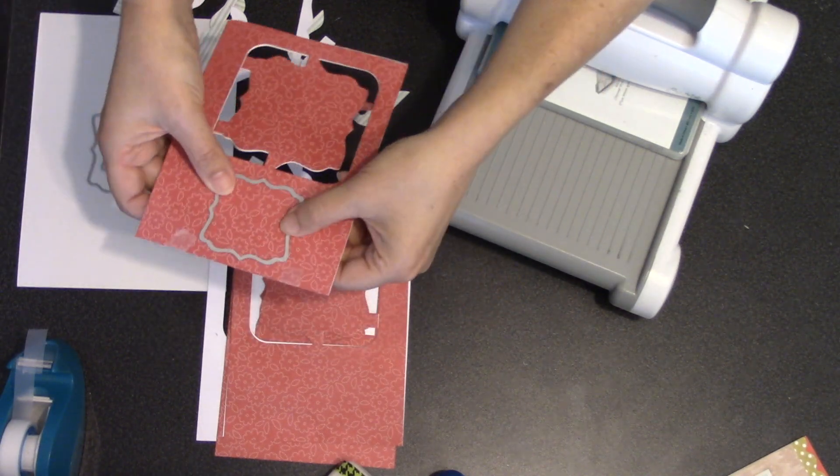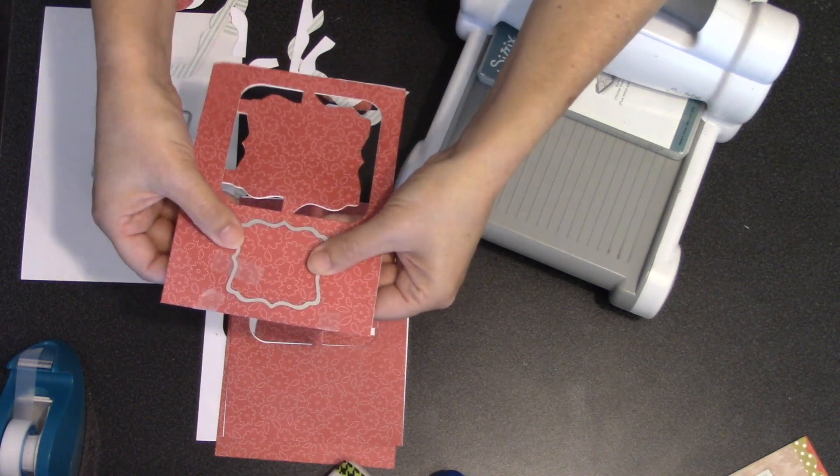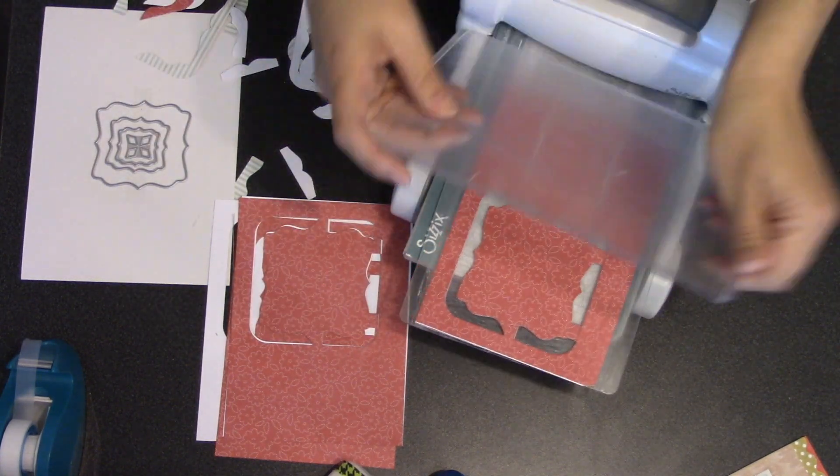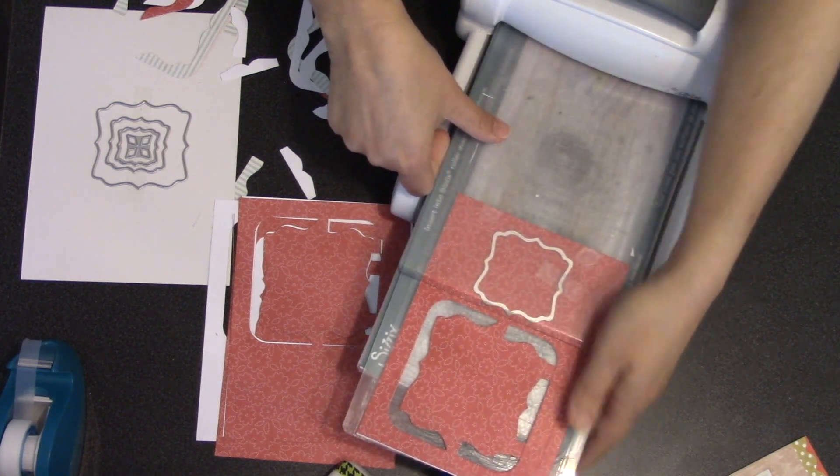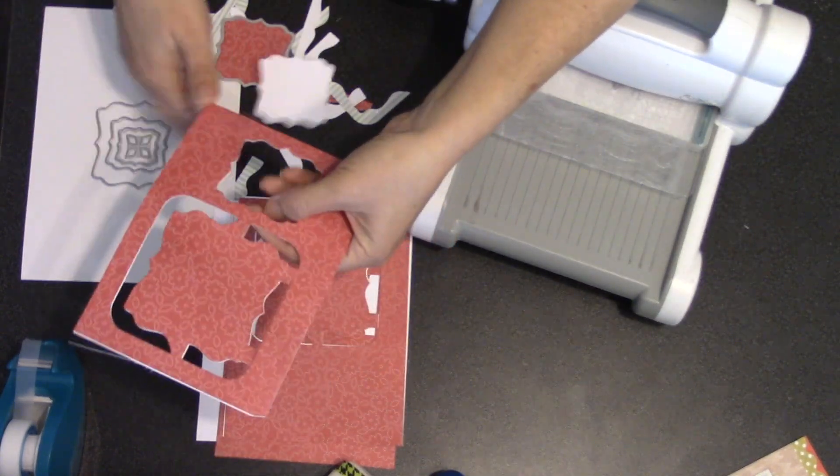I'm choosing the second largest decorator label die that comes in the set and that's what I'm going to use to cut a hole through both layers here on this page that's going to end up being my center page in the album. So this is going to give me that hole through the album that's going to be a perfect place to hang a charm.